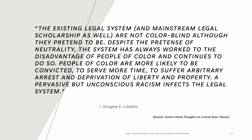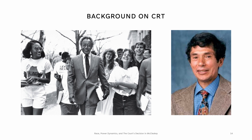The existing legal system and mainstream legal scholarship are not colorblind, although they pretend to be. Despite the pretense of neutrality, the system has always worked to the disadvantage of people of color. People of color are more likely to be convicted, to serve more time, to suffer arbitrary arrest, and deprivation of liberty and property. A pervasive but unconscious racism affects the legal system. Harvard Law School's first African American tenured professor, Bell, described CRT as a body of legal scholarship whose members share the ideological goal of addressing the struggles of racism and oppression, specifically as institutionalized by law.